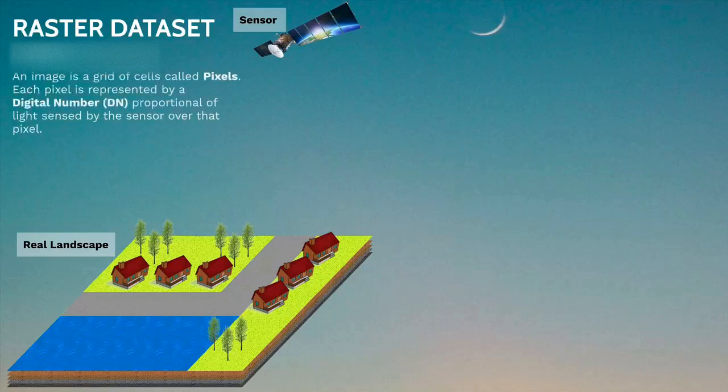Now what is an image? An image is a grid of cells that are commonly called pixels. Let's learn by an example.